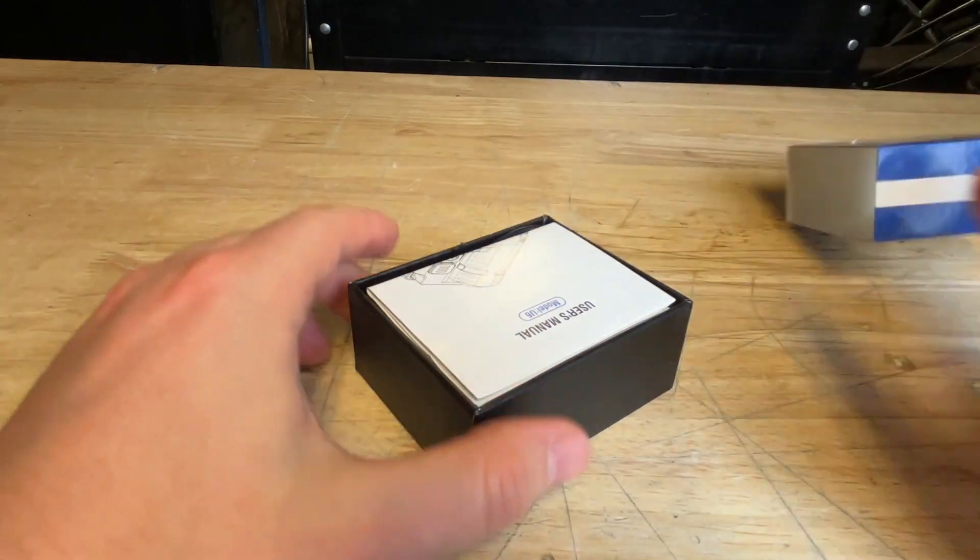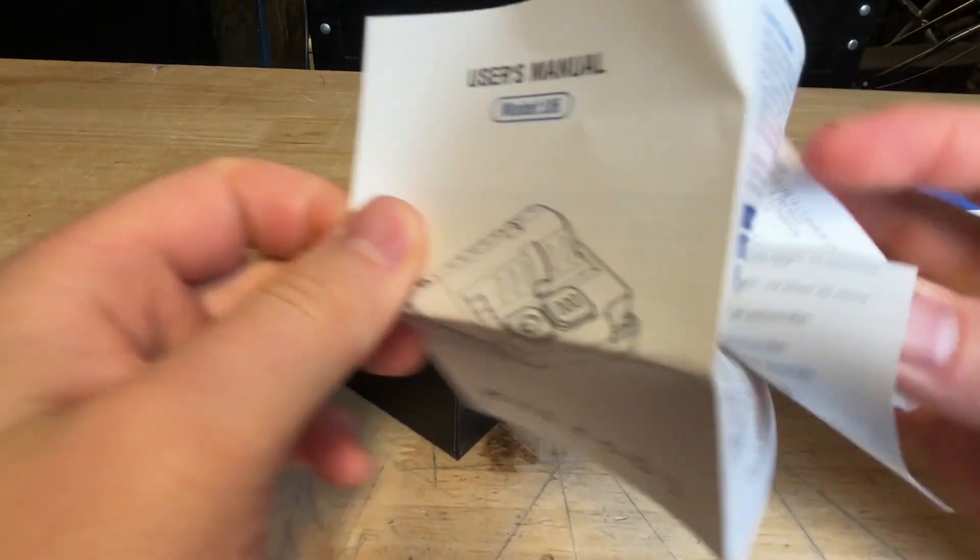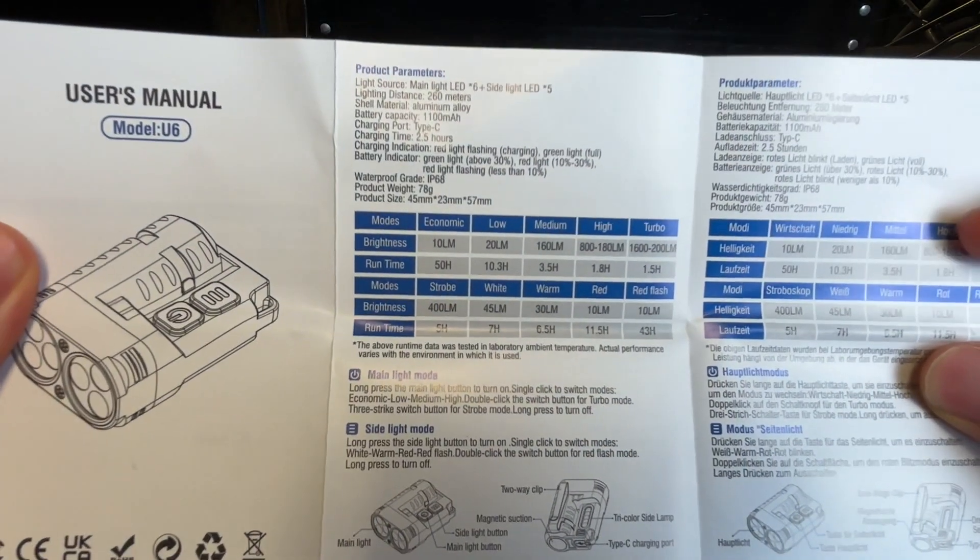Seventy-eight grams is the net weight, and it looks like some type of aluminum alloy plus ABS. We got a side light. Let's check that out here. I think that spec sheet should be in the user manual here somewhere. Yeah, right here. Awesome.